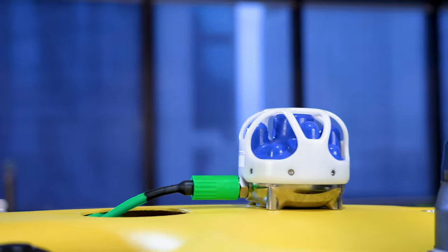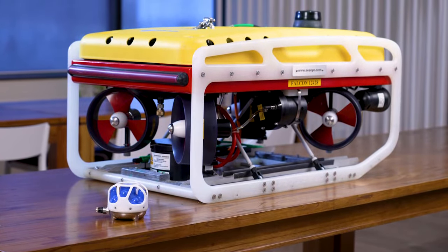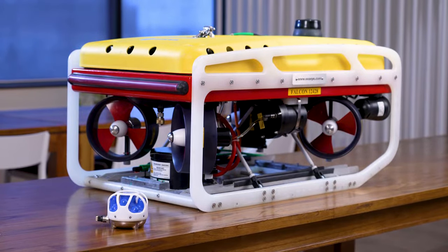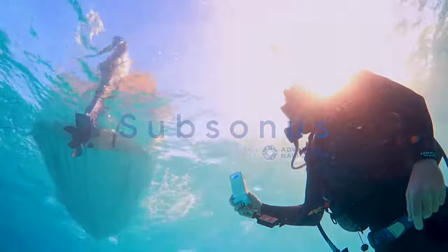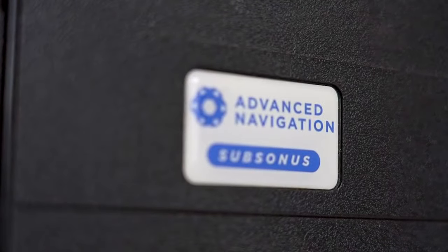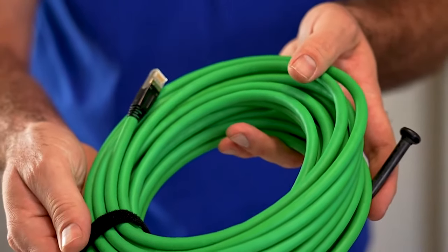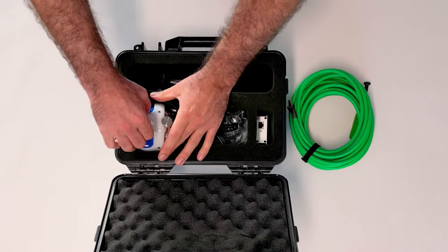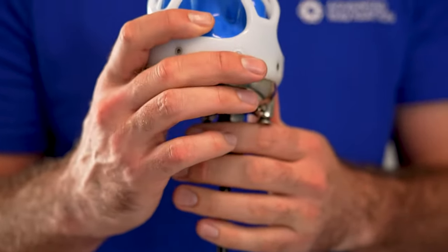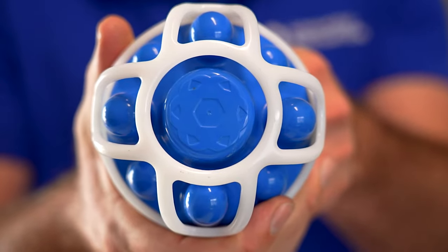to 1,000 meters. Subsonus can track other Subsonus USBL and also Subsonus Tags, a battery-powered acoustic transponder. The Subsonus kit includes everything you need to get started: a subsea cable to provide both power and data to the transducer, a Subsonus transducer with a vertical connector designed for easy pole mounting on a vessel,